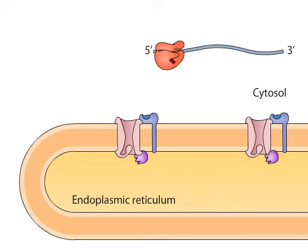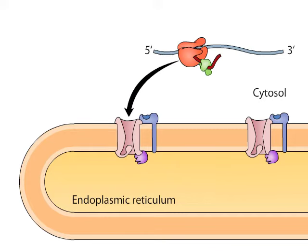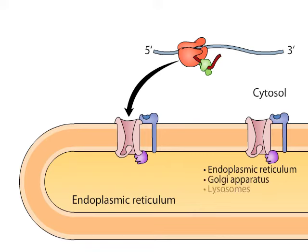Soon after the protein starts to emerge from the ribosome, it may become directed to the endoplasmic reticulum, or ER. It is targeted to the ER if it is ultimately destined for incorporation into the ER, the Golgi apparatus, lysosomes, or plasma membrane, or if it is destined for secretion.